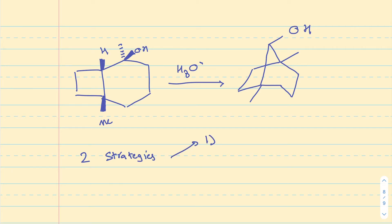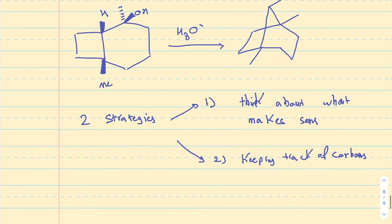Strategy number one is going to be thinking about what makes sense to happen. What is reasonable under these conditions? So, what makes sense? Strategy number two is going to be keeping track of carbons through numbering, keeping track of carbons, or atoms in general, but mostly carbons, using numbering.